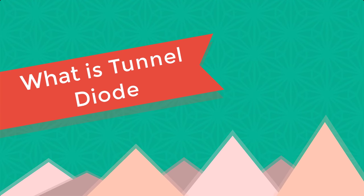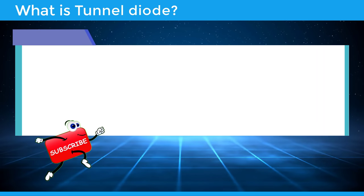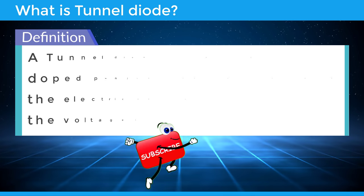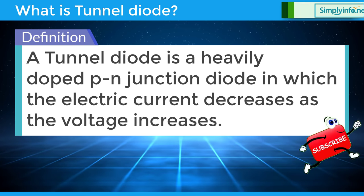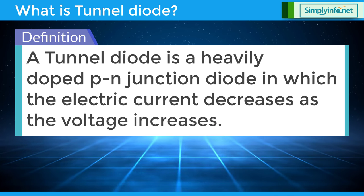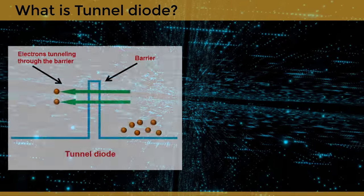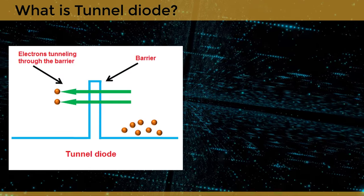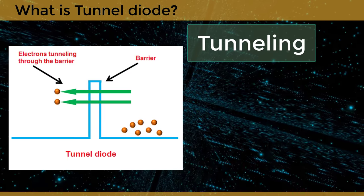A tunnel diode is a heavily doped PN junction diode in which the electric current decreases as the voltage increases. In a tunnel diode, electric current is caused by tunneling.